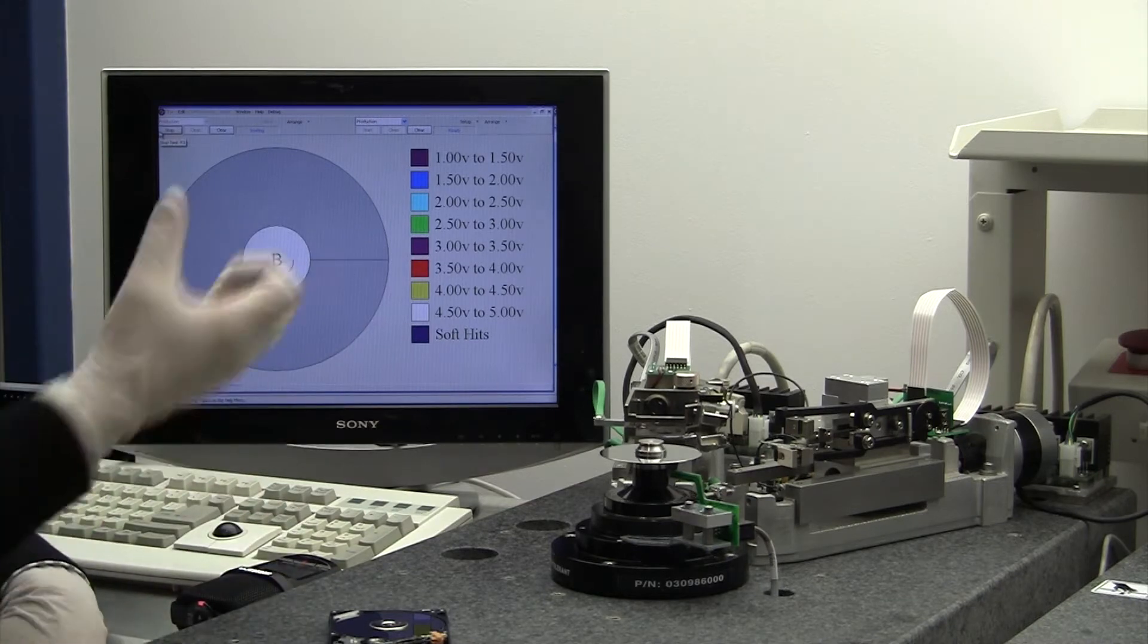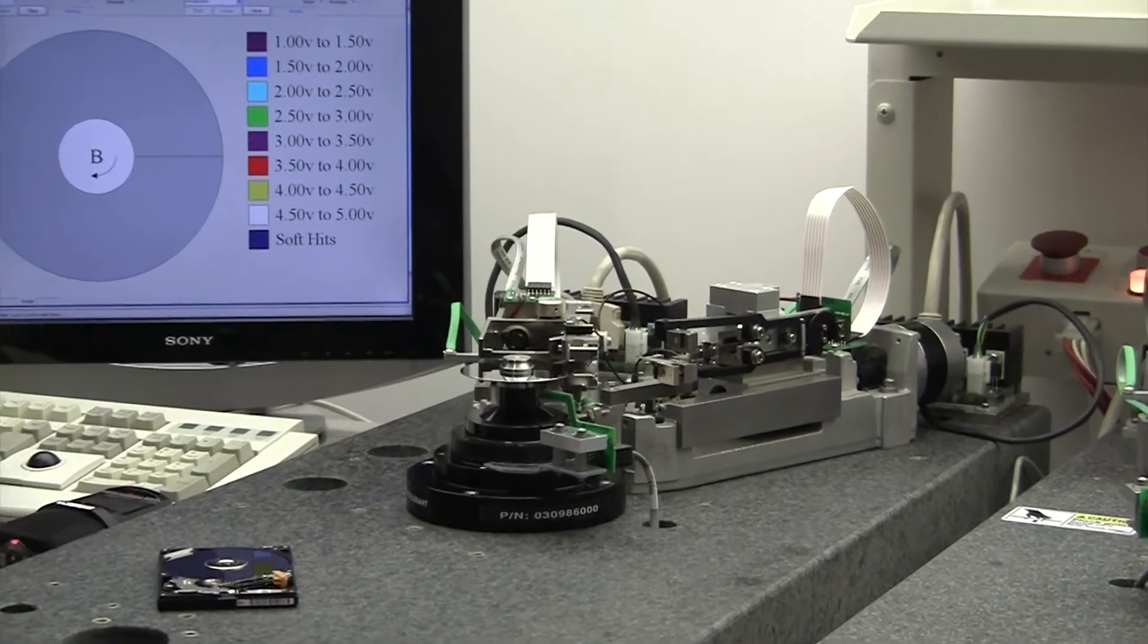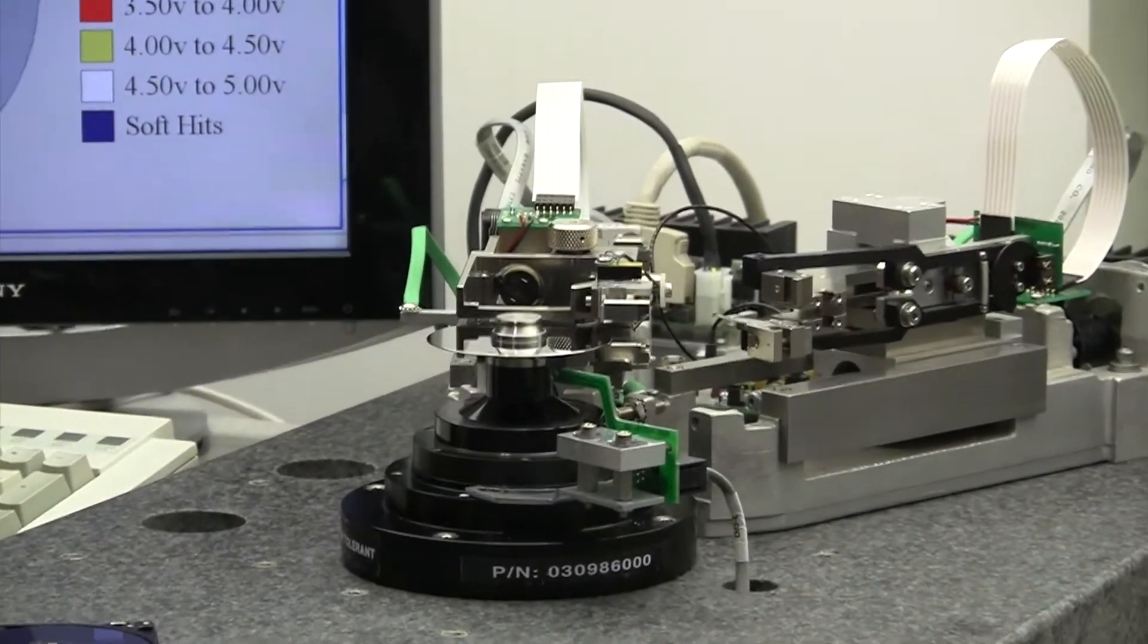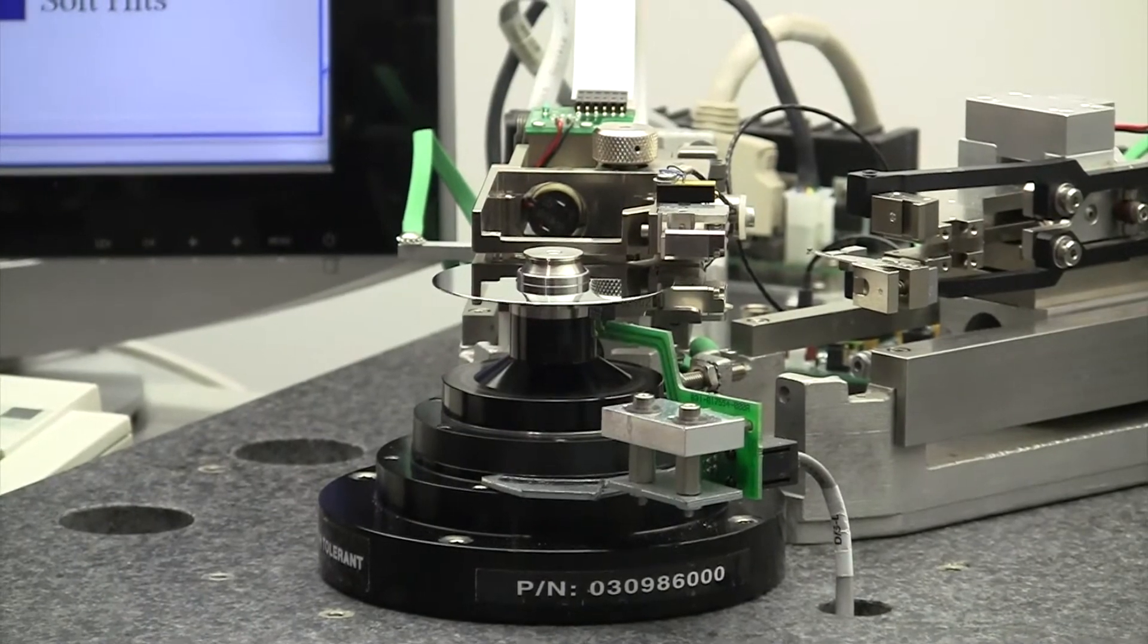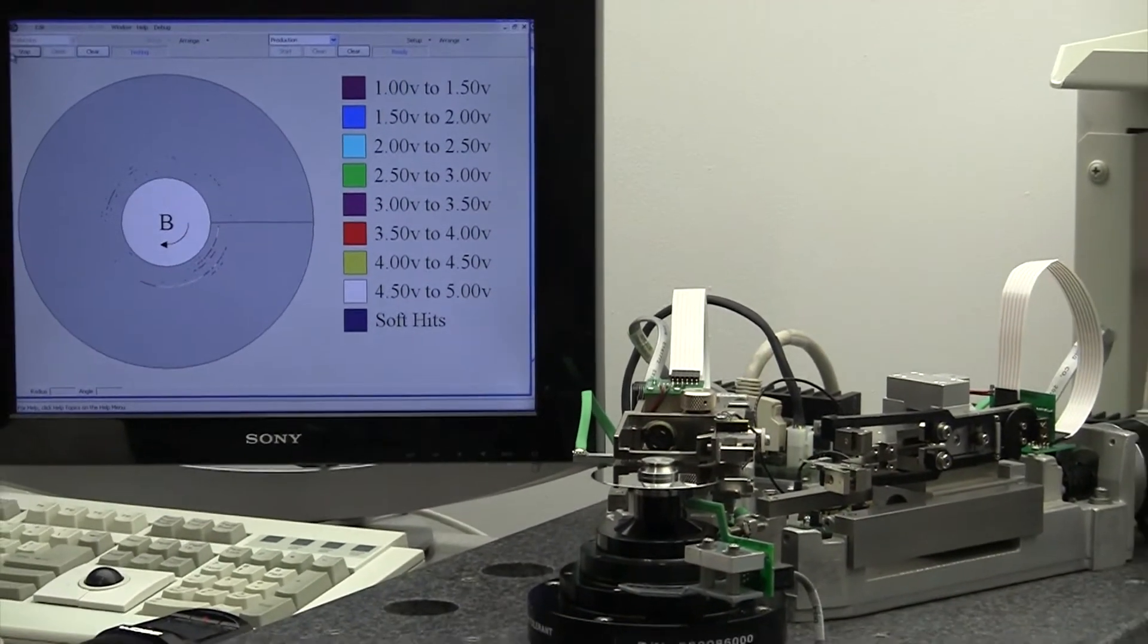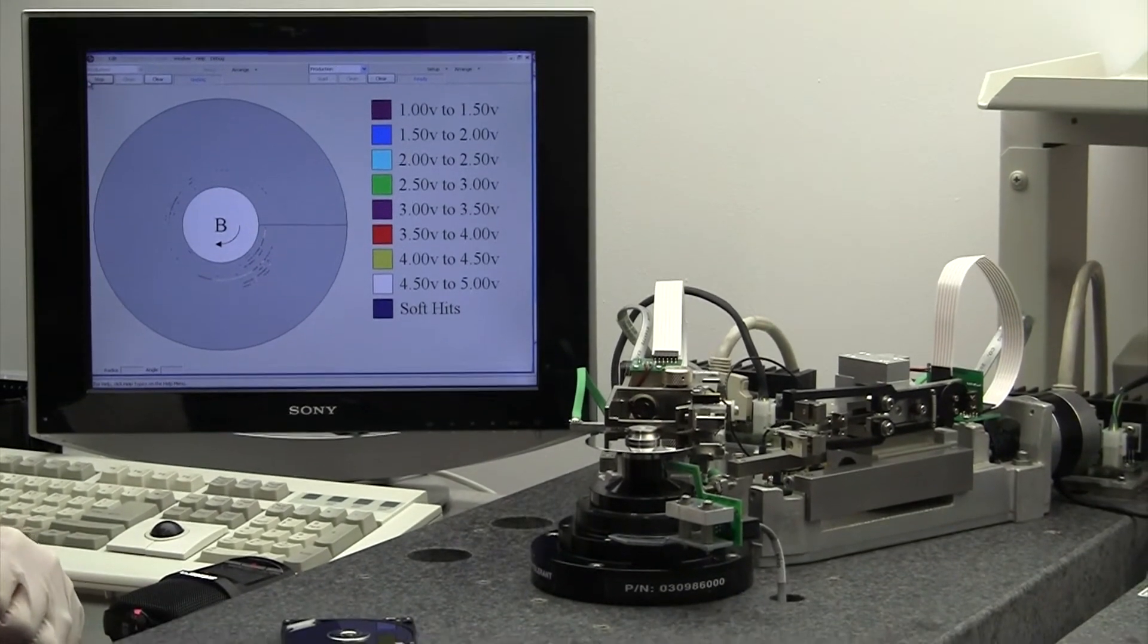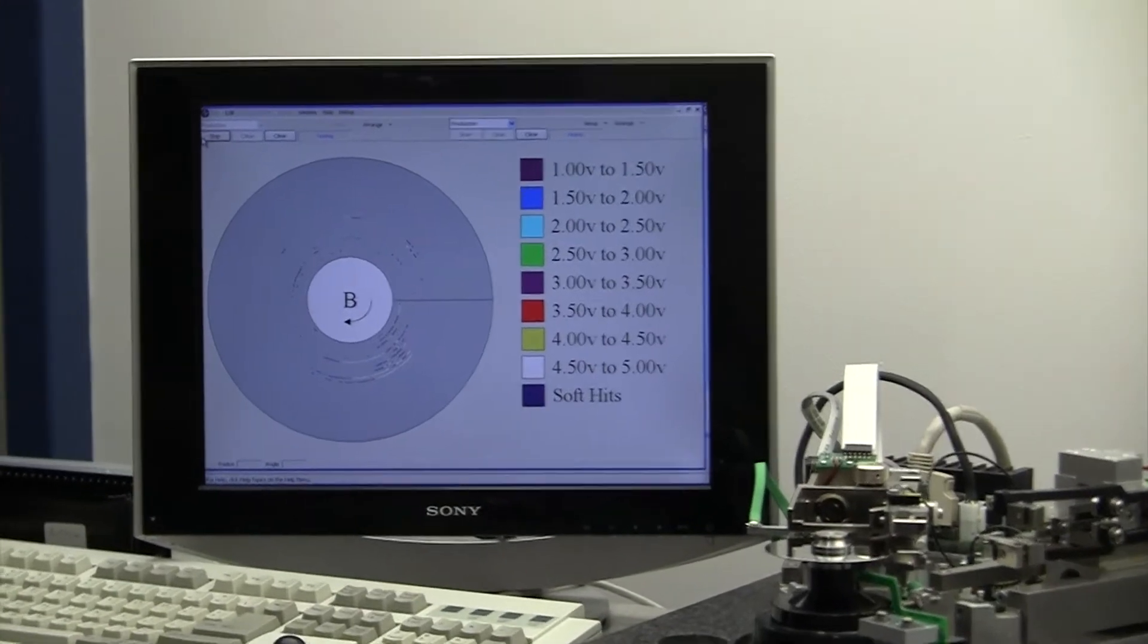So the first thing that's going to happen is it's going to clamp the platter down. And this is spinning at about 15,000 RPM. So it's spinning extremely fast. Now on the screen here, you can see that it's going to be recording all the little dirt and debris and hits that it gets or encounters. Every time that glide head deflects, it records that hit here on the screen.